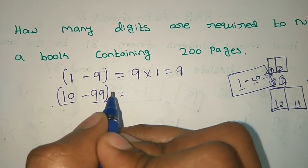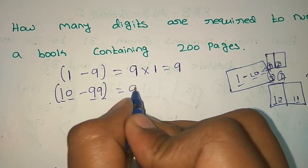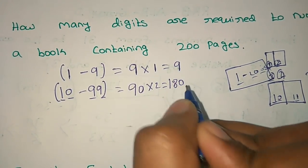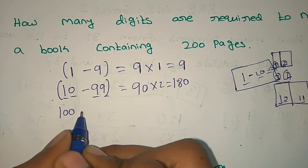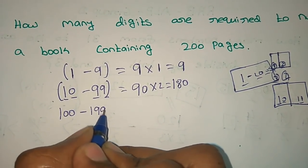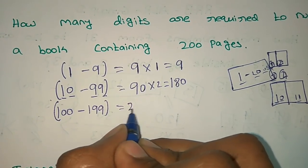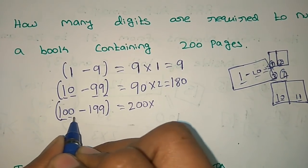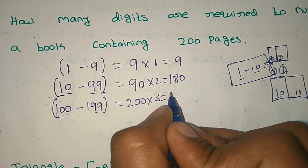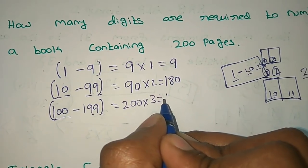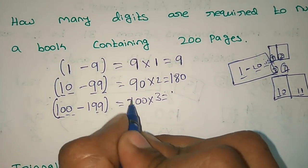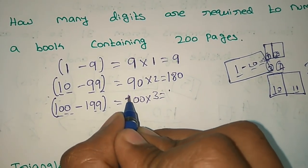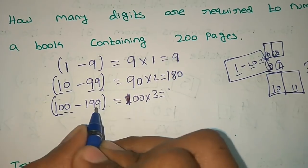So there are 9 single-digit numbers. Then 10 to 99 are double-digit numbers. 90 pages × 2 digits = 180 digits. Then from 100 onwards we add 3-digit numbers. So 100 has 3 digits.